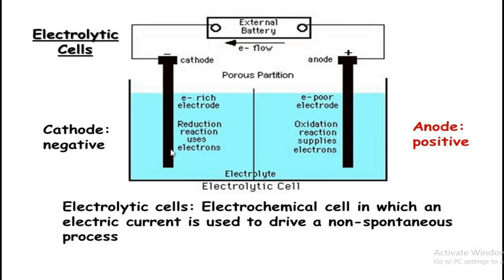Electrons flow through the battery to the cathode, which is the electron-rich electrode. Positive ions — cations — from the electrolyte move to the cathode and gain electrons, so reduction occurs at the cathode. In an electrolytic cell, electric current is used to drive a non-spontaneous process. In a spontaneous process, chemical energy converts to electrical energy, but in a non-spontaneous process, we provide electrical energy to carry out the chemical reaction.